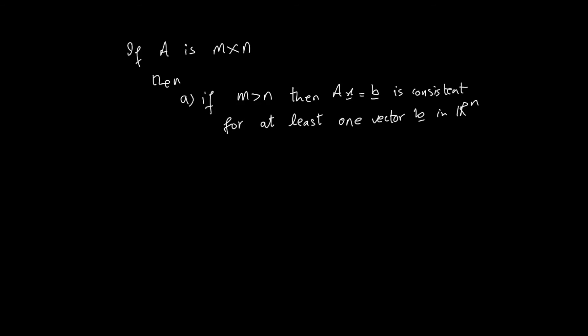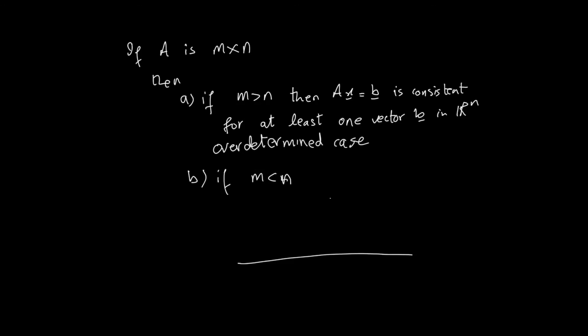One final result: if A is an M by N matrix and M is greater than N, then the system Ax equals B is consistent for at least one vector B in R^N — this is called the over-determined case, meaning you have more equations than unknowns. On the other hand, if M is less than N, then Ax equals B is either inconsistent or has infinitely many solutions — this is the under-determined case, where the number of unknowns is more than the number of equations.